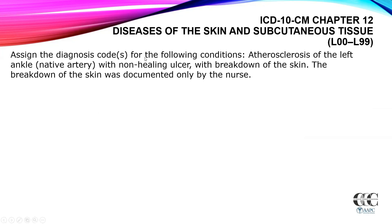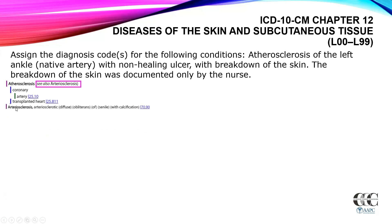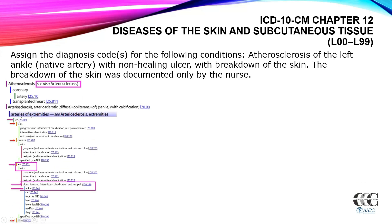Let's look at an example. Assign the diagnosis codes for the following: atherosclerosis of the left ankle, native artery, with non-healing ulcer with breakdown of the skin. The breakdown of the skin was documented only by the nurse. We start with atherosclerosis; the alphabetic index directs us via a 'see also' note to arteriosclerosis, then arteries of extremities. Under extremities, we navigate to leg, then left, and under the 'with' convention we find ulceration, which gives us I70.249. Adding ankle specificity brings us to I70.243.